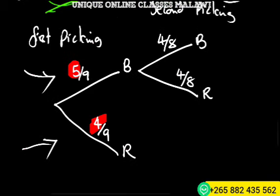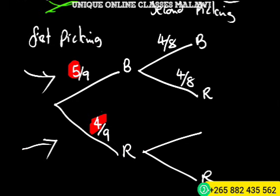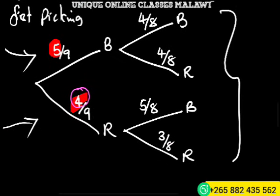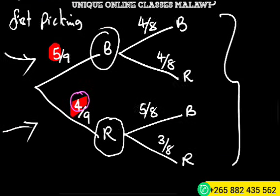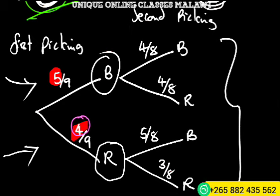When we picked red first, if we pick red again, there are only three red sweets remaining, so the probability is 3 over 8. The total is eight and there are still five blue sweets, so it's 5 over 8 for picking blue after red.